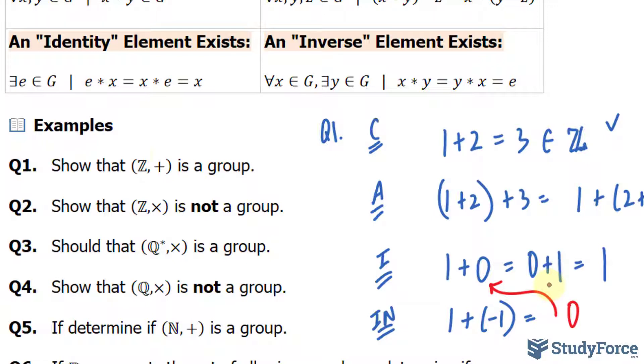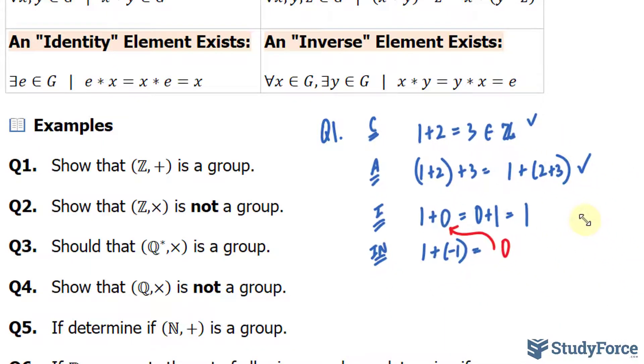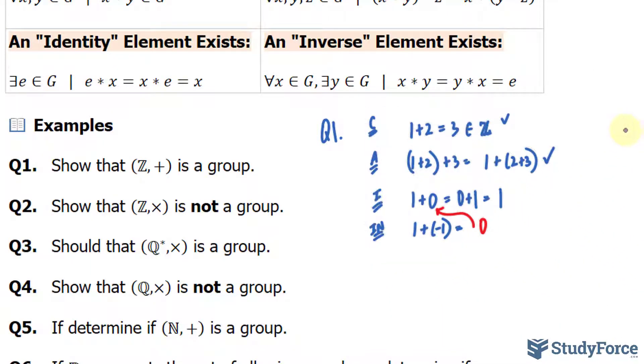So we've just shown that (Z, +) is a group because all four properties are satisfied. Now of course, this is not a formal proof, not even close. It is good enough for the sake of this video, given that we are introducing groups for the first time.